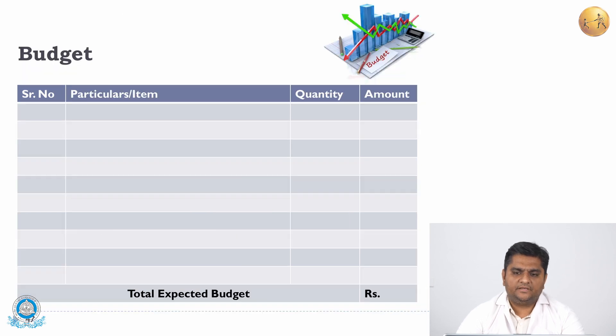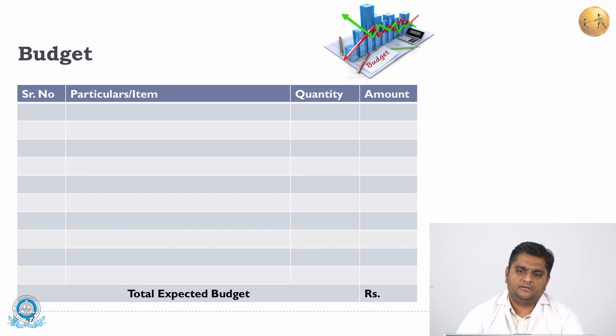For the budget proposal, you need to mention each particular item to be purchased, the quantity, and the amount. This also needs to be approved by the institutional research recognition committee or the ethical committee before you proceed. That concludes Part 1 of this presentation — in the next presentation, we will cover the remaining four parts of the research protocol. Thank you.